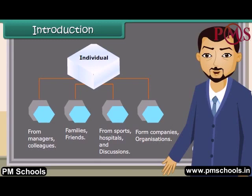Types of data. Primary data. Secondary data. Data which are not originally collected but obtained from published or unpublished sources are called secondary data.